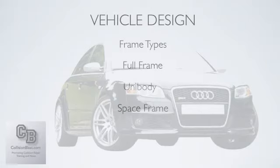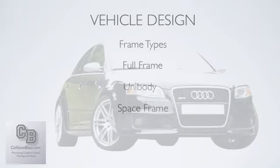Then you have space frames. A space frame is a type of unibody, but the difference is a space frame has its full integrity in the frame itself. With a unibody, it takes some of those panels welded on — like the quarter panels and roof — to get its full strength. With a space frame, you could take all the panels off and it would still have its full integrity. Think of a funny car — a race car — where the bodies are just for looks. You could take the body off and that car would still be just as strong. So a space frame is a type of unibody, but a unibody is not a space frame.